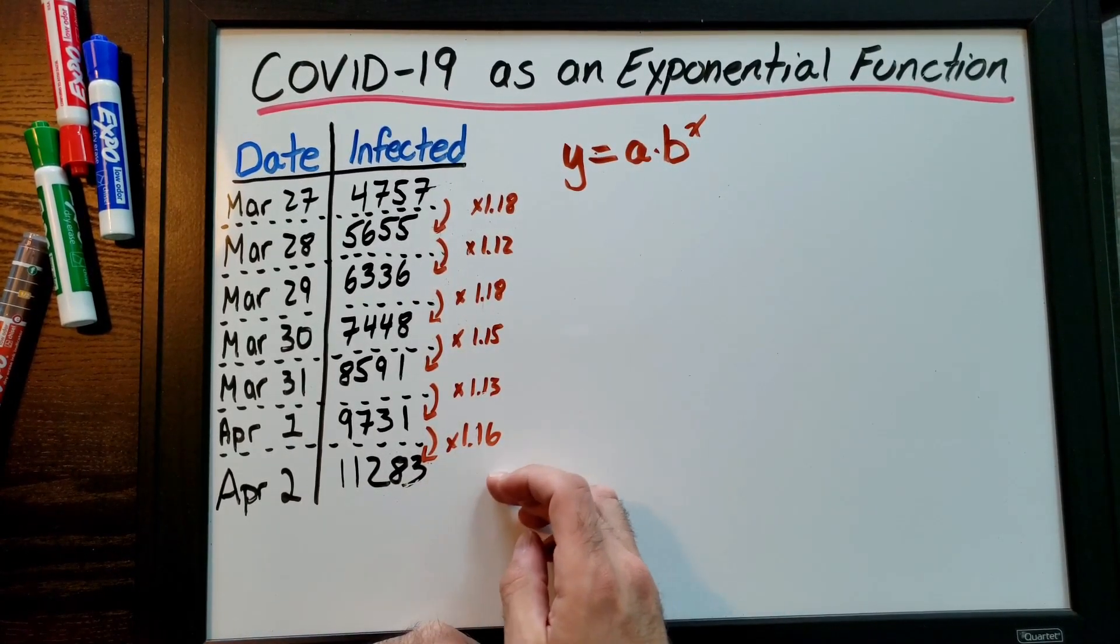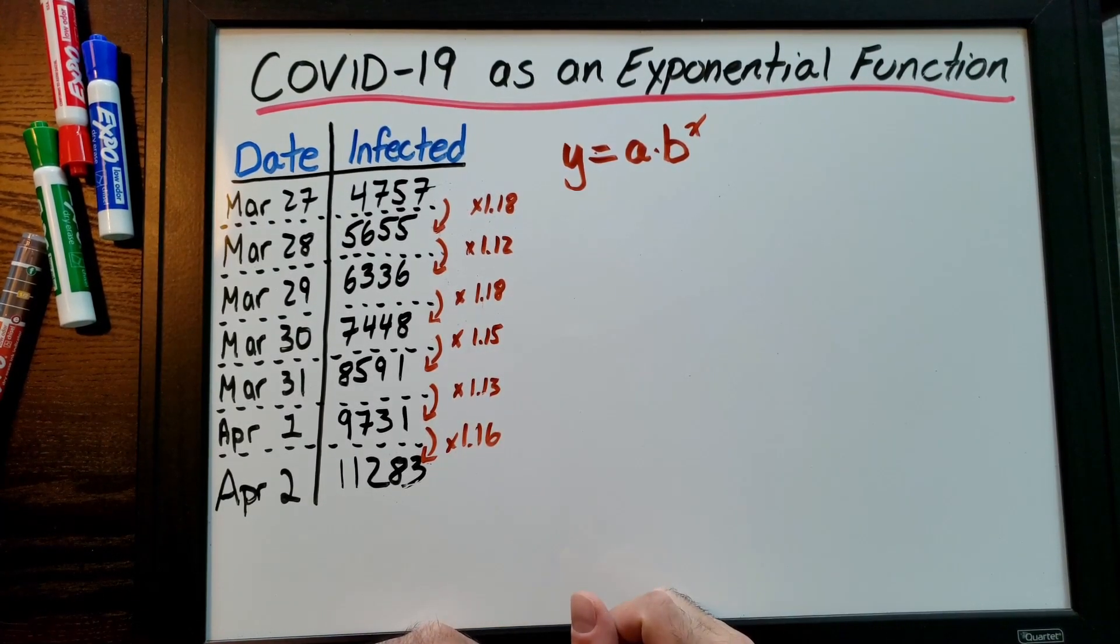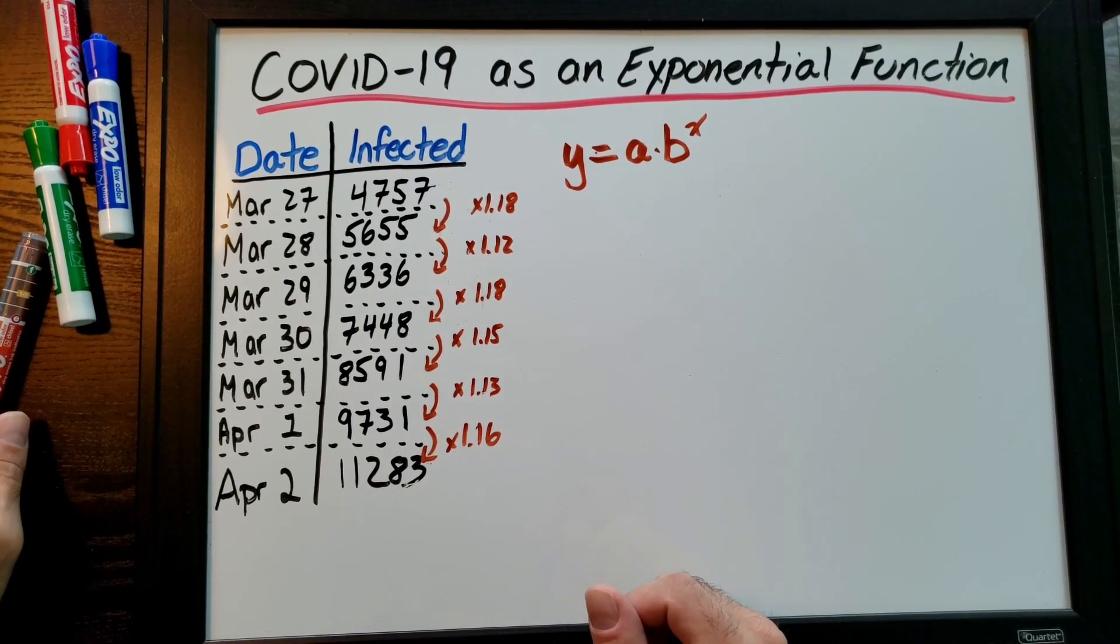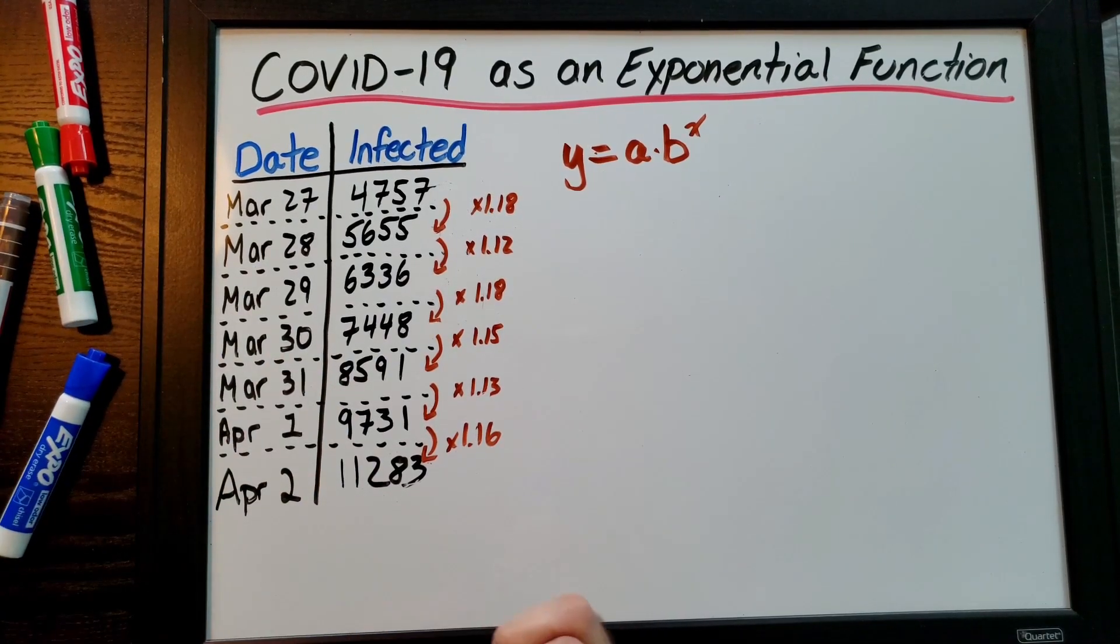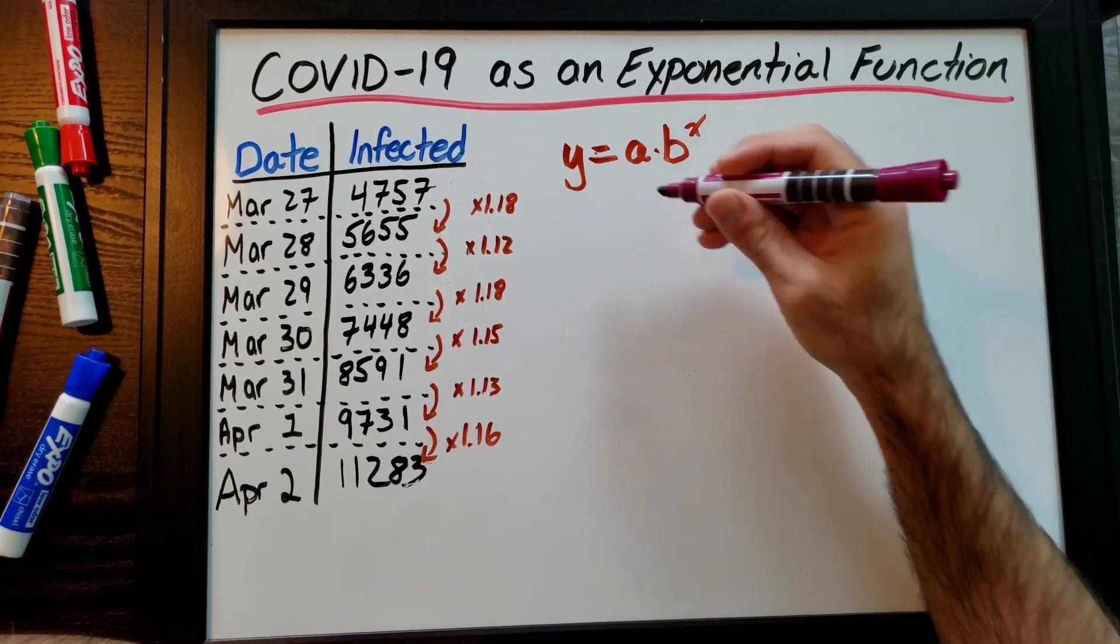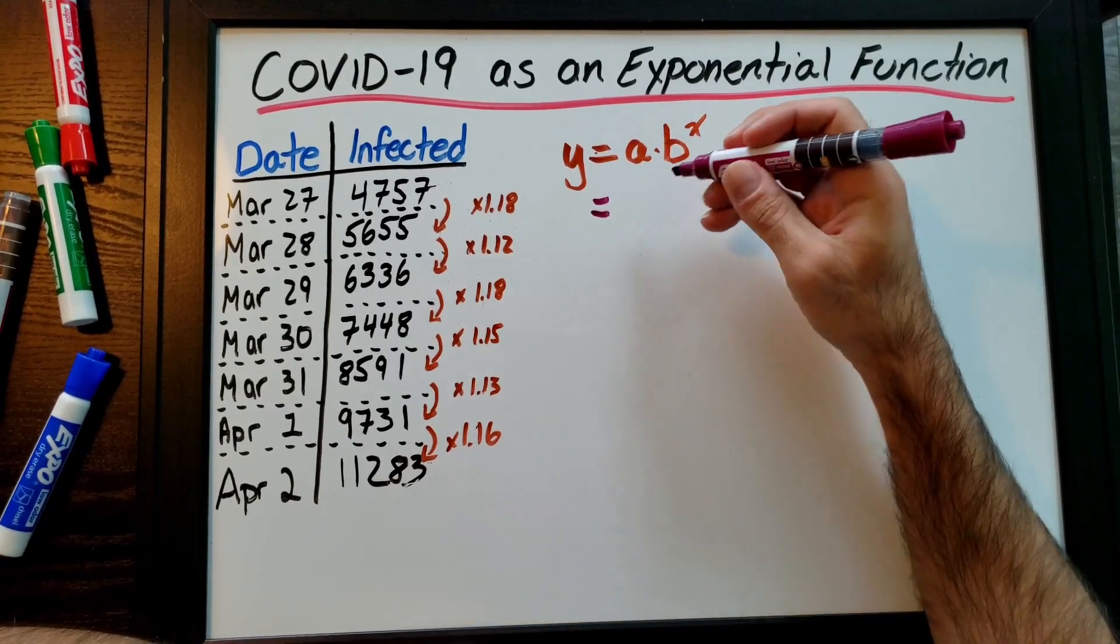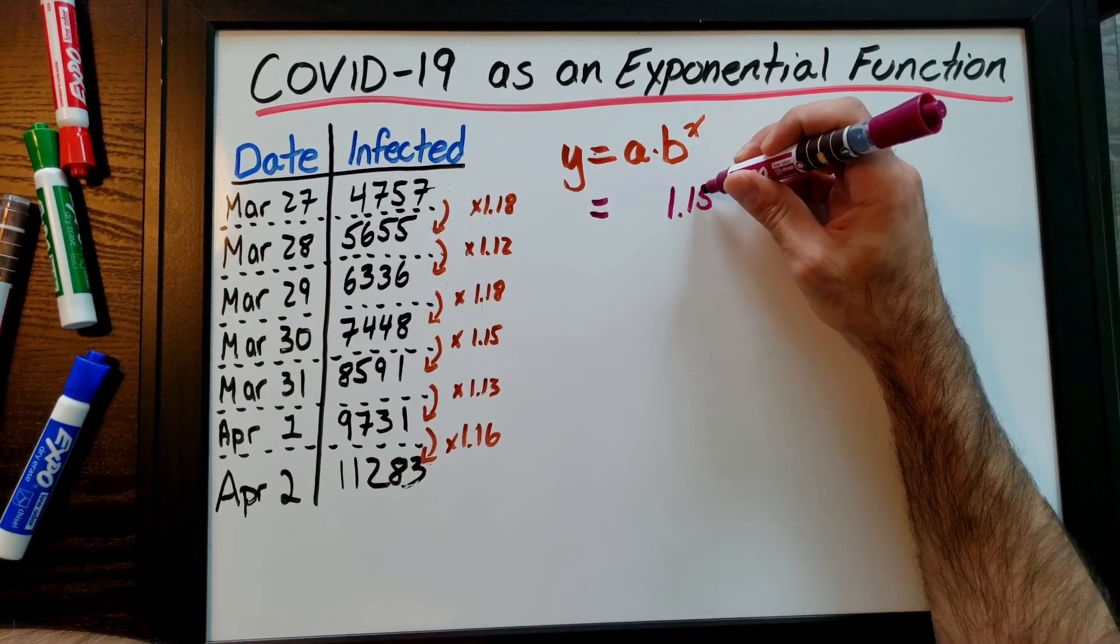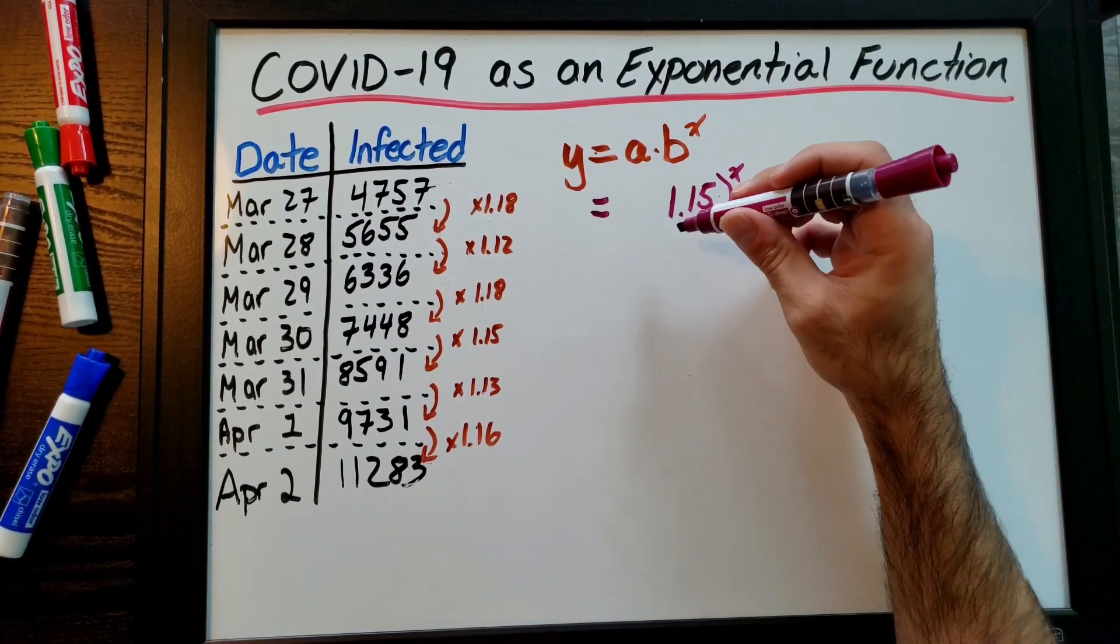Just for simplicity I'm going to average these numbers to about 1.15 and I'm going to call this our exponential growth. Obviously not entirely accurate but good enough for what we need to do. So now I'm going to go here and in our exponential growth formula which is a times b to the x, I'm going to plug in whatever my growth is. I called it 1.15 so this is going to be 1.15 to the x.